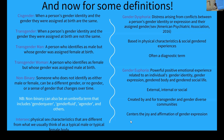Cisgender is anyone whose gender identity and the gender they were assigned at birth are the same. Gender assigned at birth is usually determined by genitalia and chromosomes — typically XX or XY. Transgender is anyone whose gender identity is not the same as the gender they were assigned at birth. A transgender man, for example, would be someone who identifies as a man but was assigned female at birth.